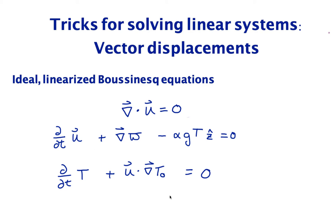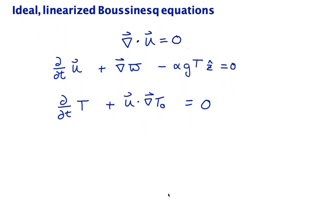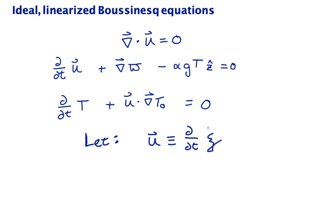If we are considering two-dimensional displacements, we would have a system of four equations with the vector u introducing two different equations, making a four-by-four system, which can be challenging to solve by hand. The vector displacement is going to give us a way to reduce our system by one variable and one equation. So to begin, we're going to introduce the vector displacement. Let u be the time derivative d/dt of the vector displacement ξ. We use the symbol ξ for vector displacements fairly typically.